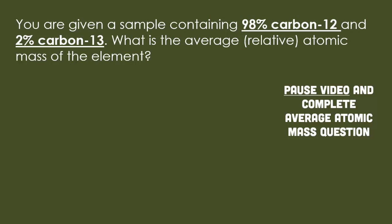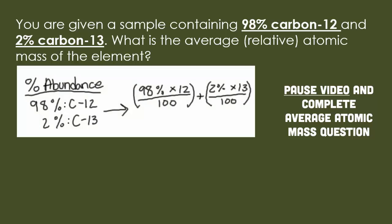Here's an example: you are given a sample containing 98% carbon-12 and 2% carbon-13. What is the average or relative atomic mass of the element? Pause the video and try to complete this on your own first. The first thing we have to do is find the two different abundances. We have percent abundance: 98% and 2%. The number 12 is the mass of the isotope, so you take 98 multiplied by 12, divided by 100. We divide by 100 because we want to take our percentage down into decimal form — percent has to be converted before you use it in mathematics.